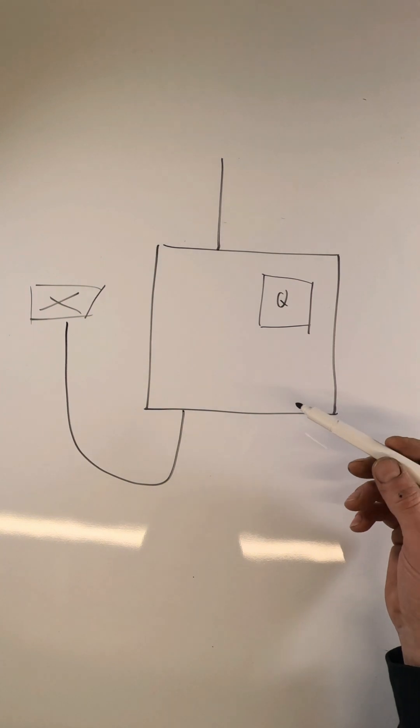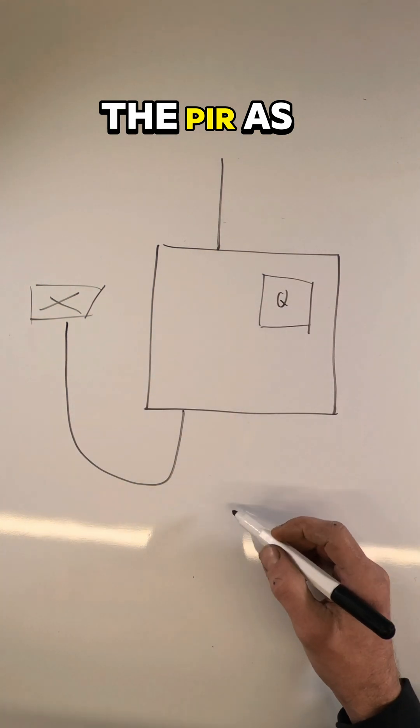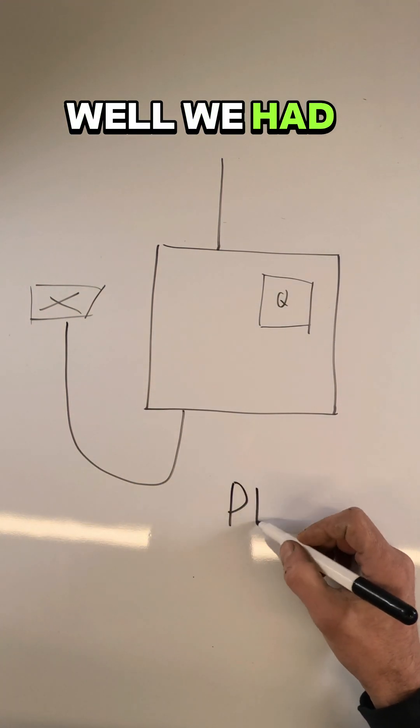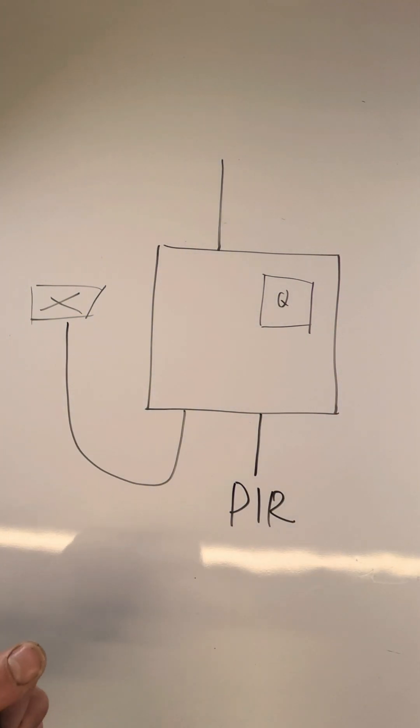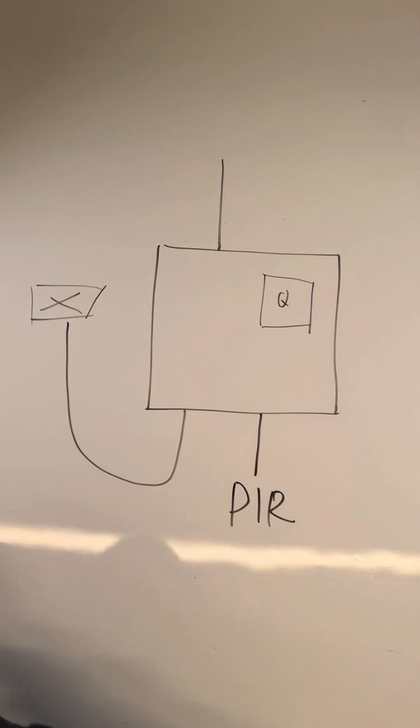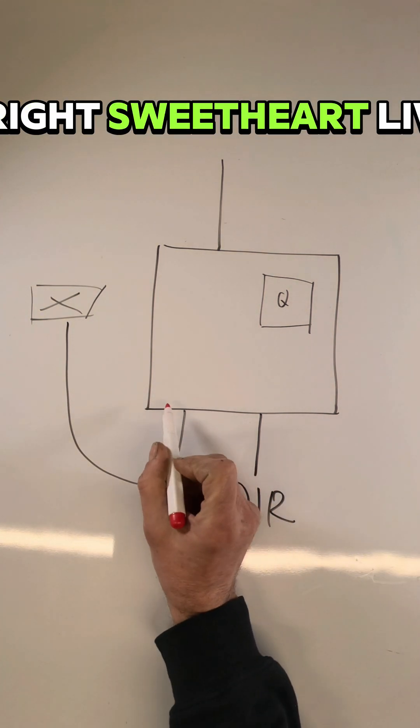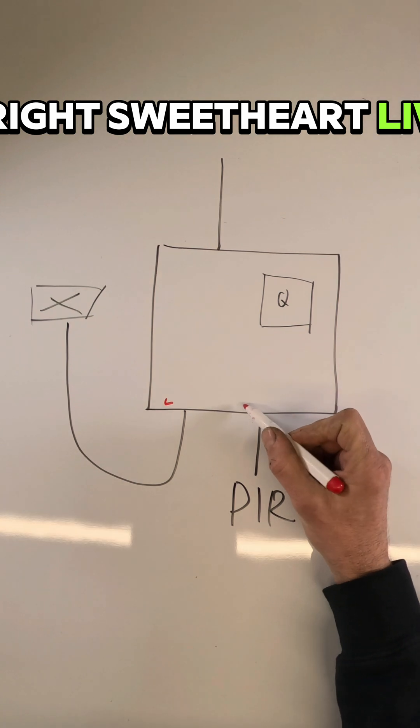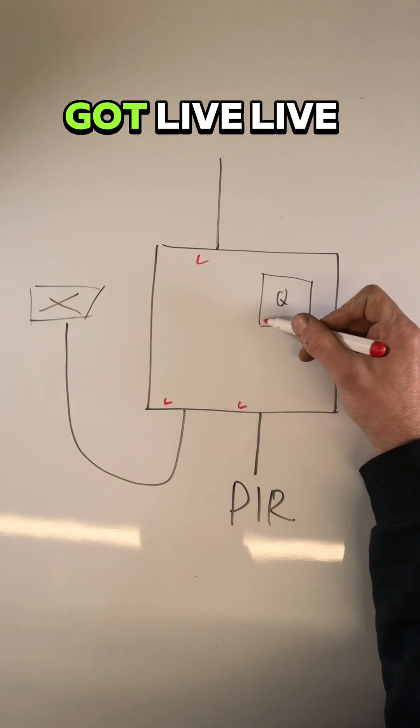Coming in we had a live, neutral, and earth. Then from the light we had a live, neutral, and earth. And from the PIR as well we had a live, neutral, an earth, and a switch. So we had a live, live, live.